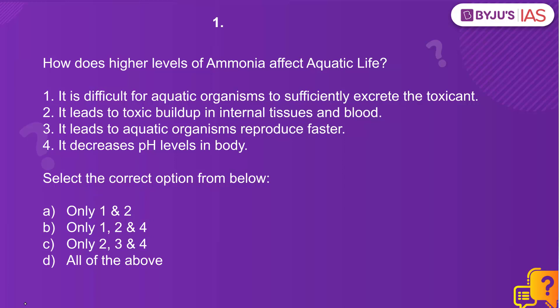How does higher levels of ammonia affect aquatic life? Statement one: it is difficult for aquatic organisms to sufficiently excrete the toxicant. Statement two: it leads to toxic buildup in internal tissues and blood. Statement three: it leads to aquatic organisms reproducing faster. Statement four: it decreases pH levels in the body. Select the correct option from below.